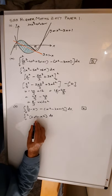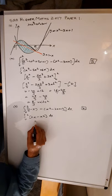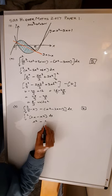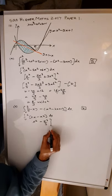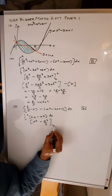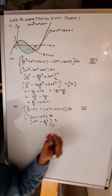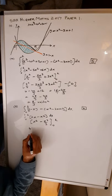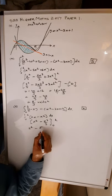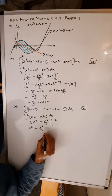Integrating: 2x to the power of 1 gives 2x squared over 2, which is x squared; minus x cubed over 3. Evaluate from 0 to 2: putting in 2 gives 2 squared minus 2 cubed over 3. Putting in 0 gives 0.